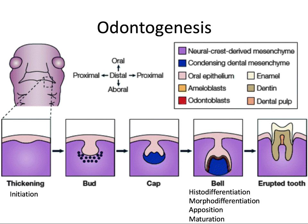Here's a really nice schematic showing the different developing layers and the different stages from beginning to erupted tooth. We're going to talk about all of these in detail, and I'll definitely focus on the bud, the cap, and the bell stages, which are nice to remember because each corresponds to the shape that the enamel organ is assuming in each one of those stages. So let's talk about each one in detail starting with thickening or initiation.